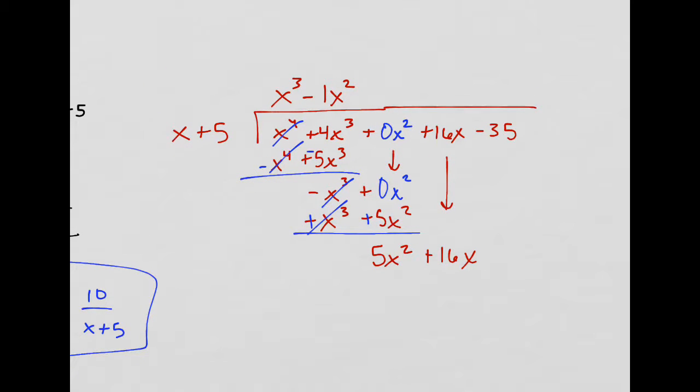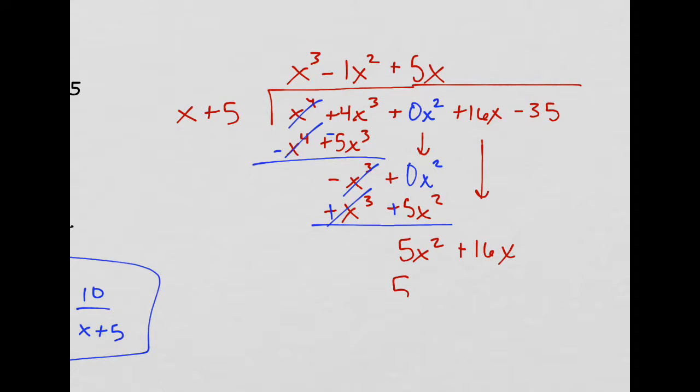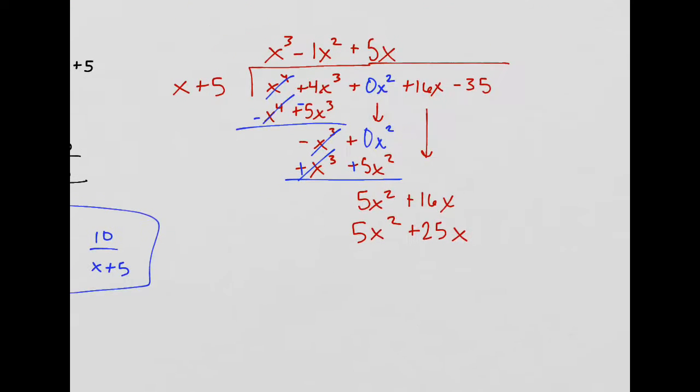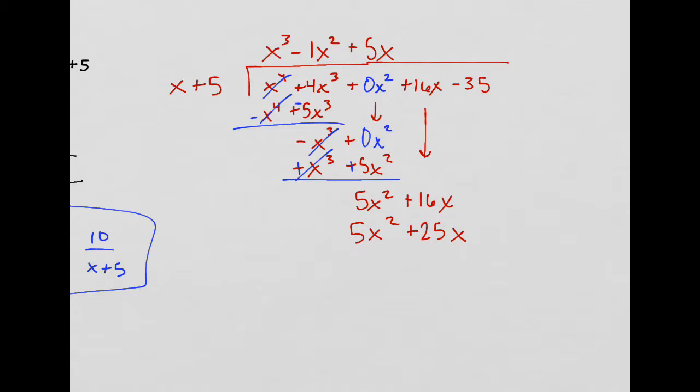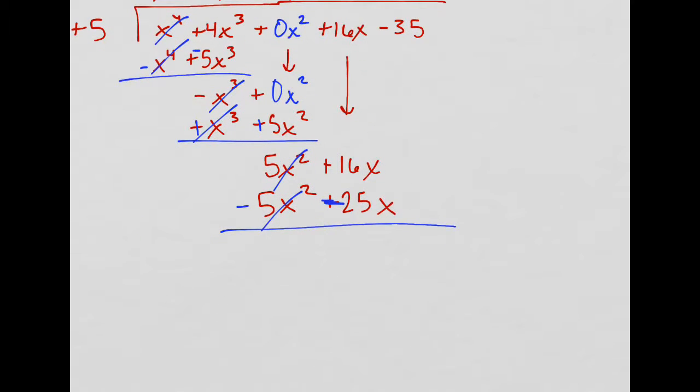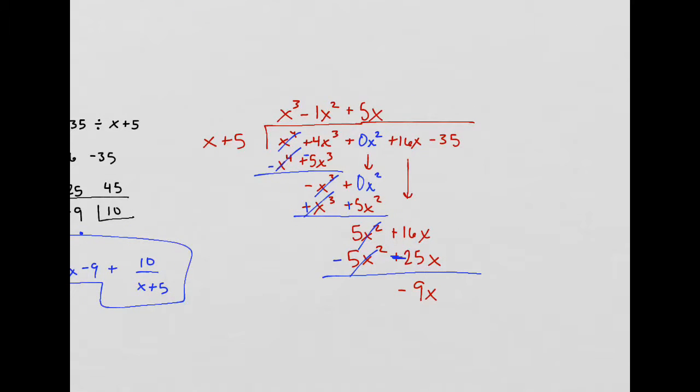And then what times x gives me 5x squared? Well, that's just going to be 5x, right? Yep. 5x squared. And then I distribute this to the other piece. That is 25x. That's very nice. Change the sign to subtract. And that's a minus. Okay. That cancels out. And then I get negative 9x. Quite a bit of a process.